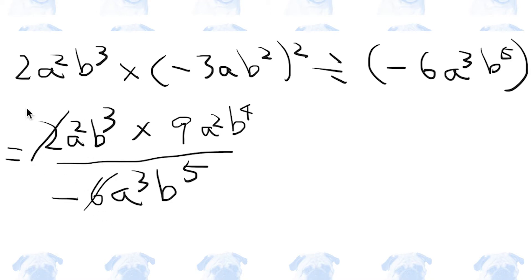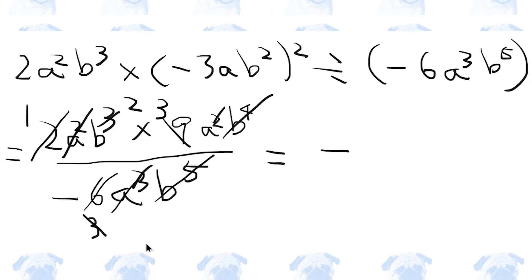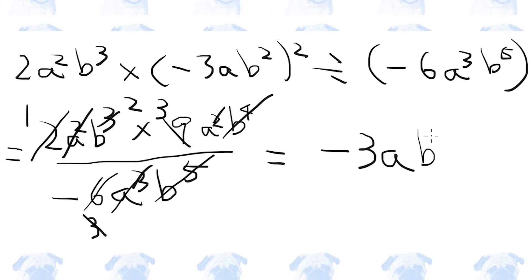Simplifying: 2, 6, 1, 3. There should be nothing left on the denominator. The coefficient would be negative 3. And how many a's are there? 1. And how many b's? b squared. So this is the answer: negative 3a b squared.